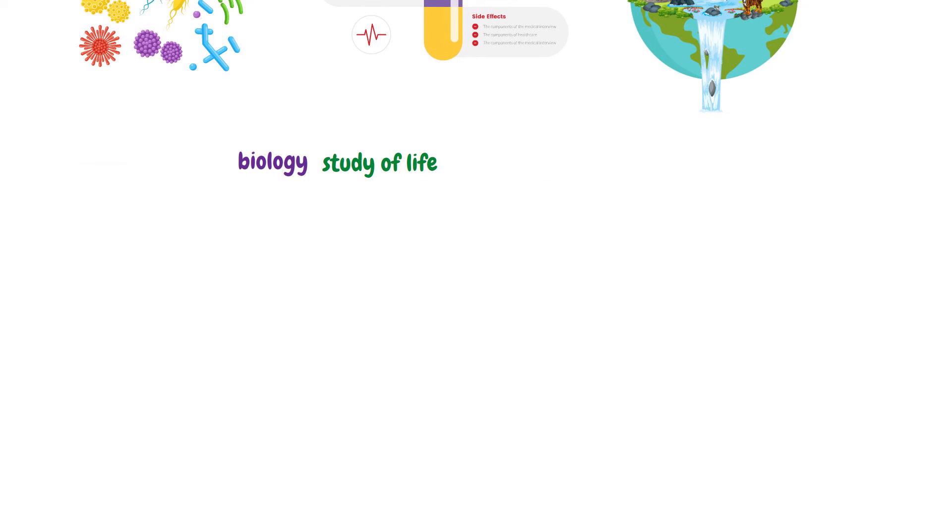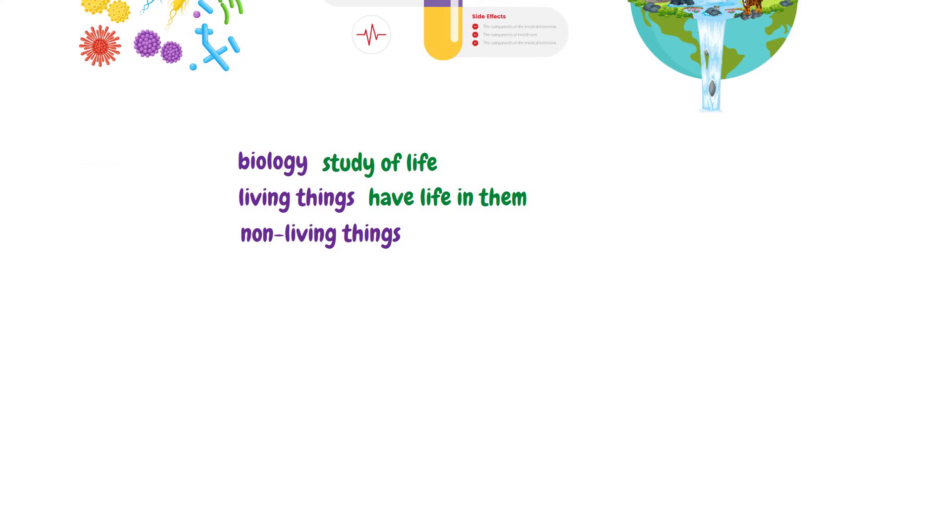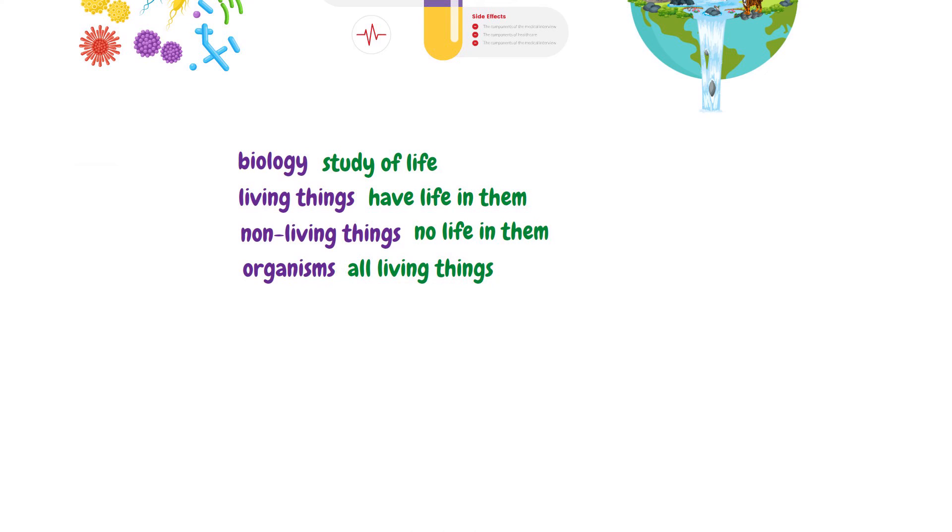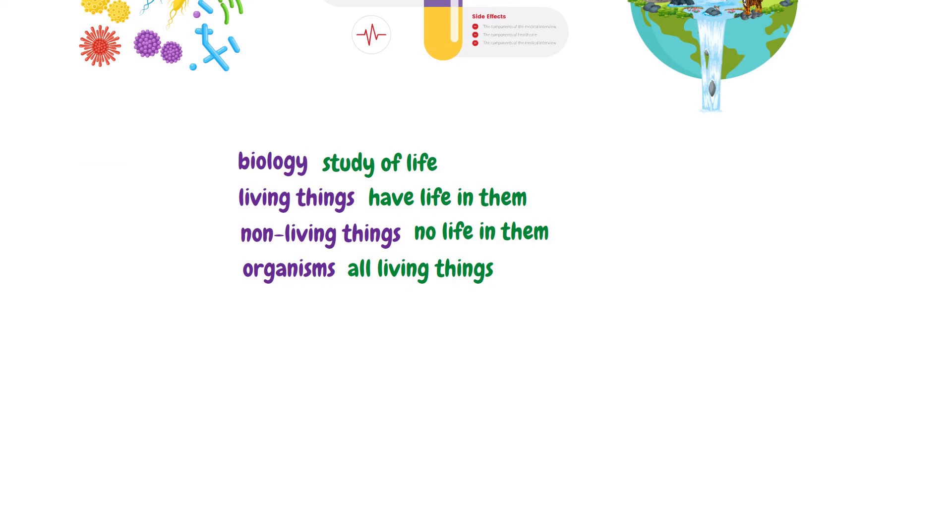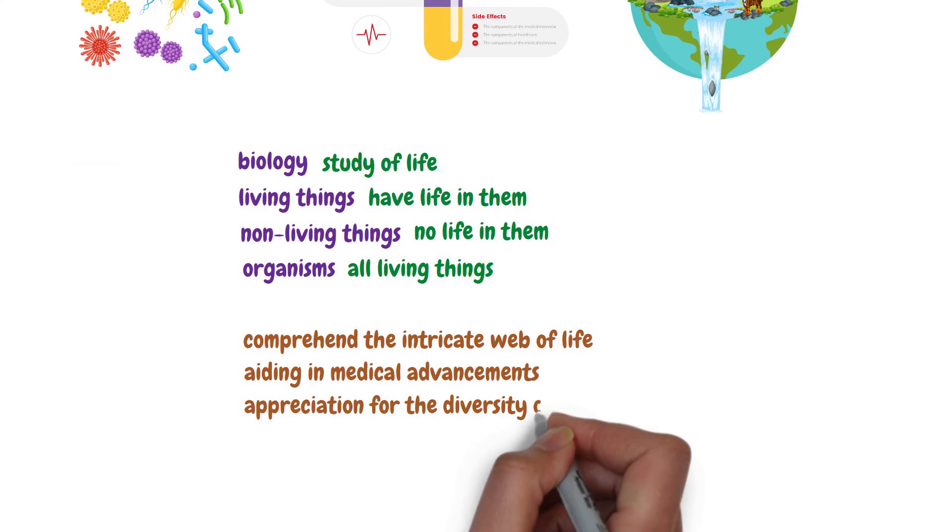To recap, we've journeyed through the essence of biology, defining it as the study of life and delving into the two biological classes: living things that have life in them, and non-living things that have no life in them. The term organism encapsulates all living things, from the mightiest creatures to the most microscopic. Finally, we explored the importance of studying biology, emphasizing its role in helping us comprehend the intricate web of life on our planet, aiding in medical advancements, and fostering appreciation for the diversity of life.